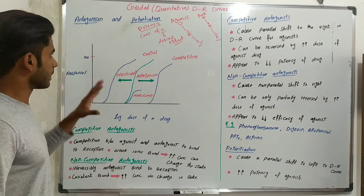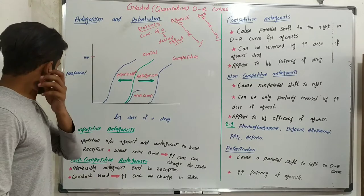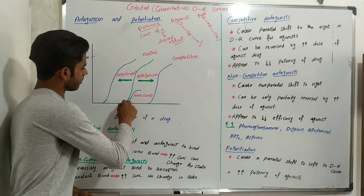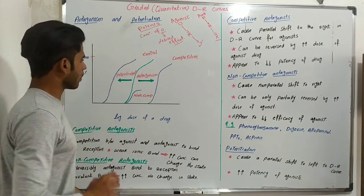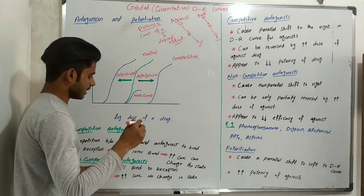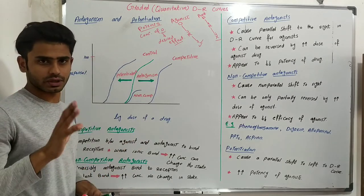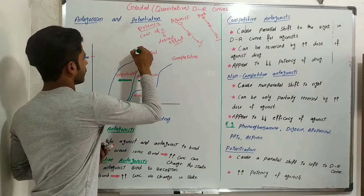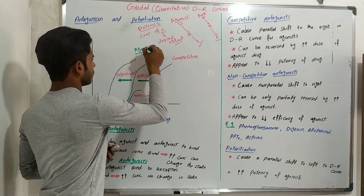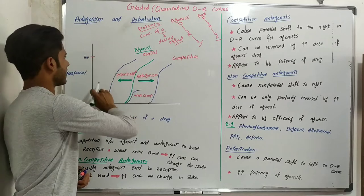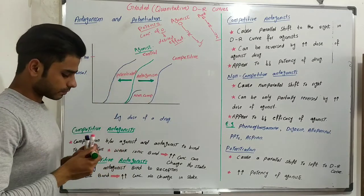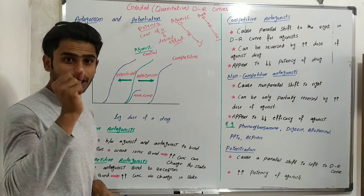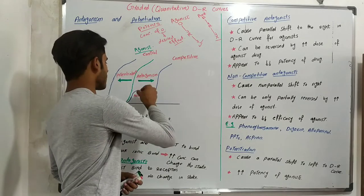Now please look at this graph where we will explain antagonism and potentiation in detail. In this graph we have response on the y-axis and log dose of a drug on the x-axis. The middle green curve is our control curve, which is the agonist curve. The log dose on the x-axis represents the dose of the agonist drug, and this control curve shows the response of our agonist drug.